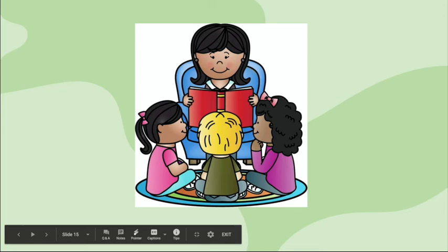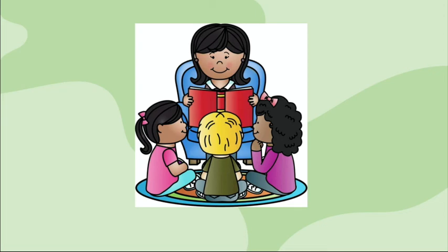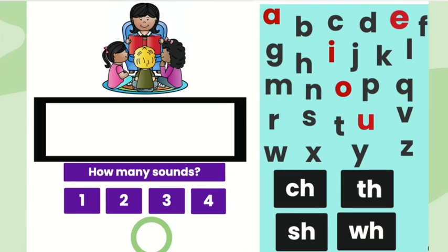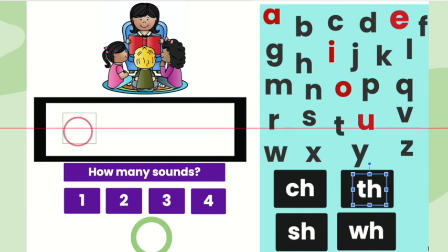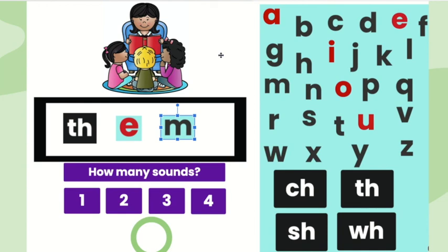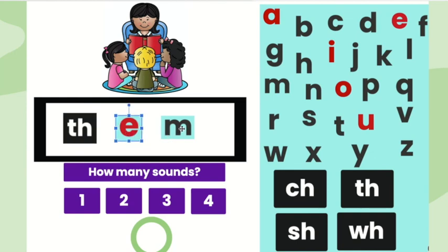Here is our final word that we are going to break apart, them — like she is reading to them. Let's create the word them. The first sound in them is th, so we will need the letters T-H. The middle sound is e, and the final sound in them is m, so we will need the letter M. There are three sounds in the word them.